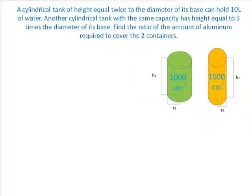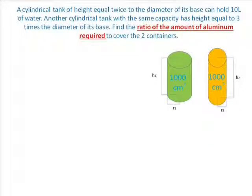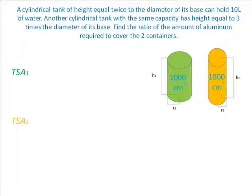In finding the ratio of the amount of aluminum required to cover the two containers, the total surface area of each container should first be solved.